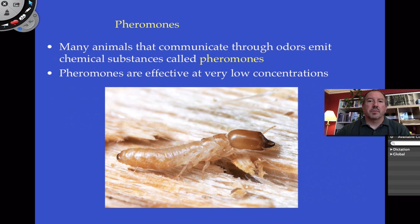Scientists are investigating the use of bees — they're trying to train bees to detect explosives like landmines. Sadly, in the Middle East there are a lot of landmines. They're trying to uncover these landmines by training bees to detect the chemical message of TNT. They're able to use bees' pheromone-like sensitivity in order to determine where the landmines are.